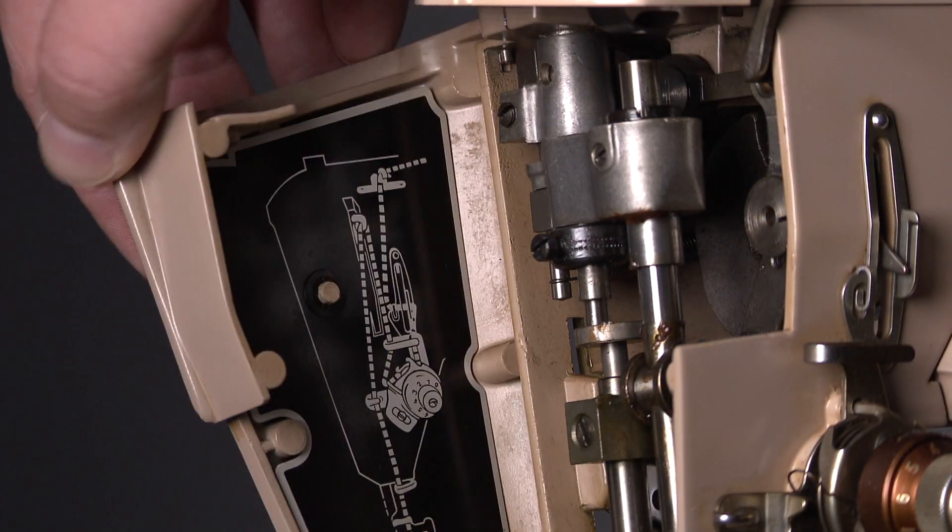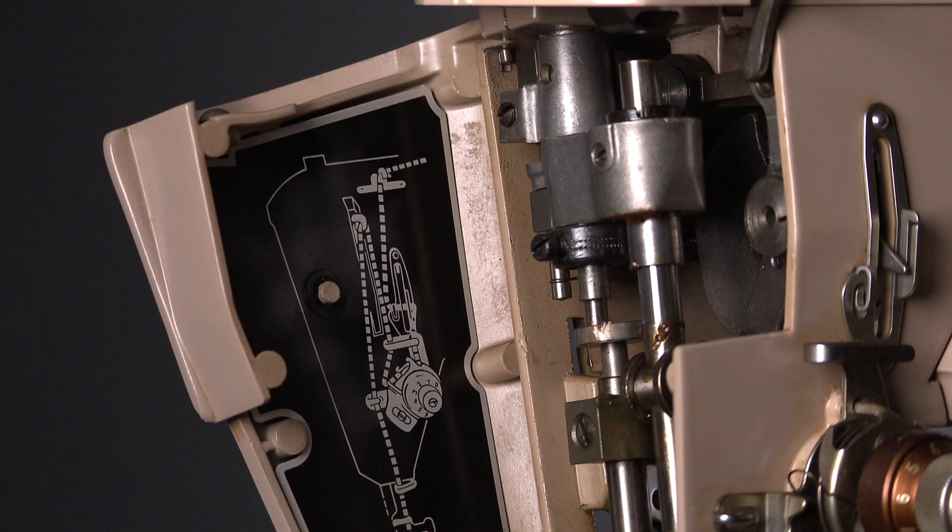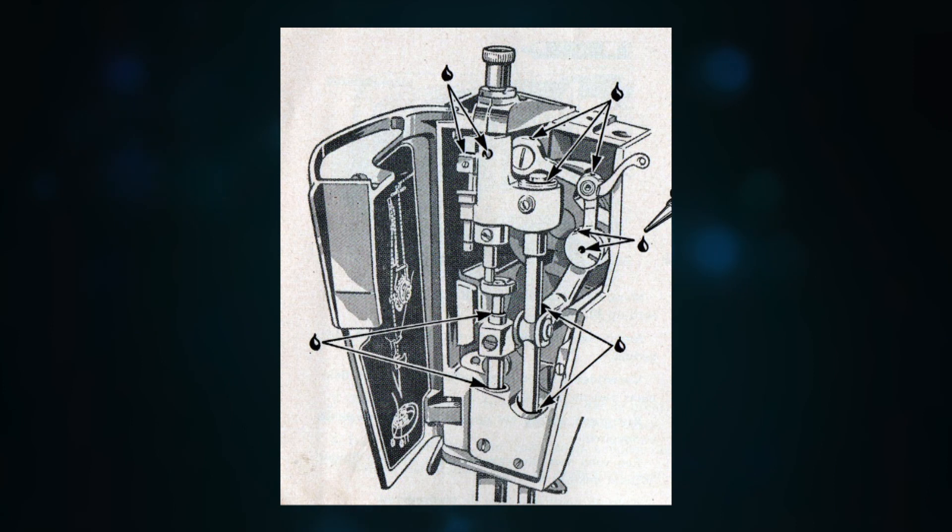Some places are accessible, like behind the faceplate. There are 11 oiling points behind that cover.